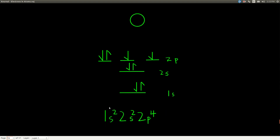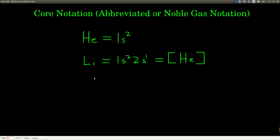When we get to oxygen, because all three 2p orbitals each have one electron, now we start pairing them up — the next electron goes into one of the already-occupied 2p orbitals with the opposite spin.